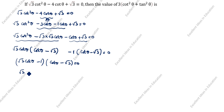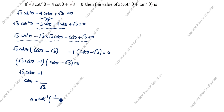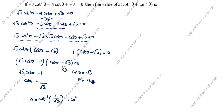Next, root 3 cot theta is equal to 1, so cot theta is equal to 1 by root 3. Theta is equal to cot inverse of 1 by root 3. Cot inverse of 1 by root 3 is 60 degrees. Next, from the other factor, cot theta is equal to root 3, so theta is equal to cot inverse of root 3, which is 30 degrees.